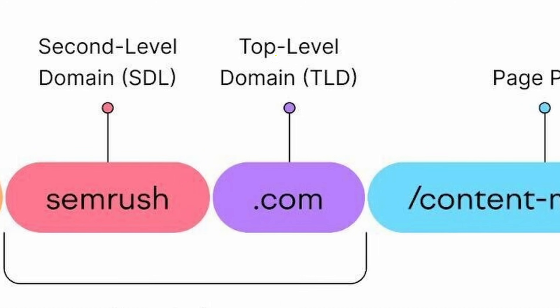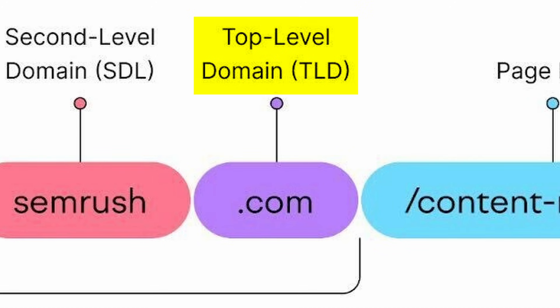Next up is the top-level domain, which is always at the end of the address and represents the type of organization or website. .com is the most common one, representing commercial websites. But there's also .mil, .edu, .org, and .gov.